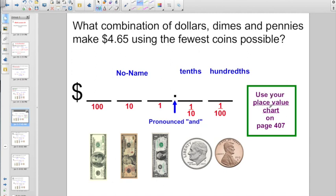What combination of dollars, dimes, and pennies make $4.65 using the fewest coins possible? Well, if we use a place value chart, and you have one on page 407 of your book. If we write in $4.65, the big mistake kids will want to go with is they're not really reading the question. They want the answer in dollars, dimes, and pennies.